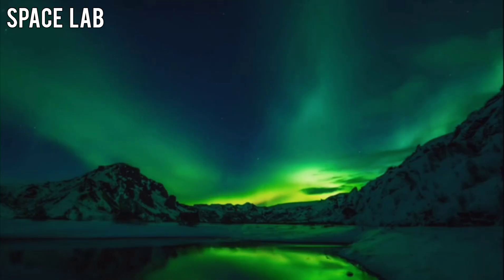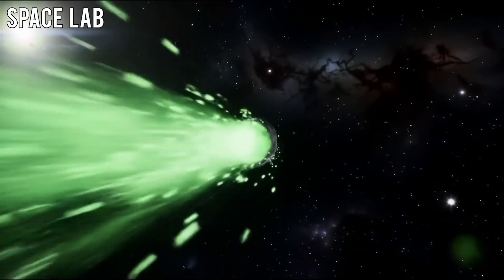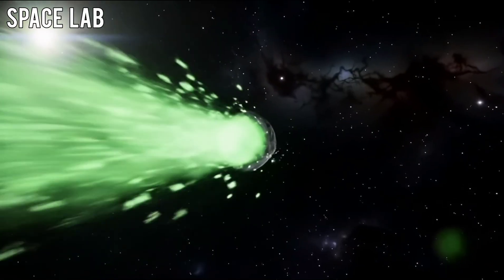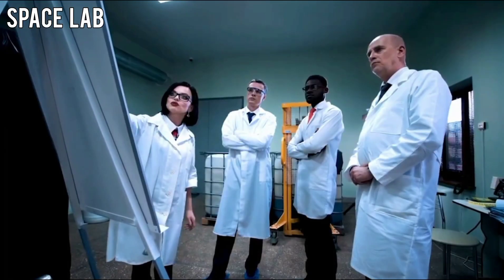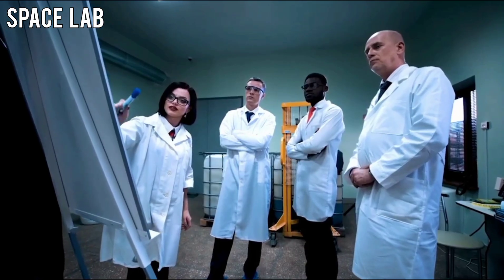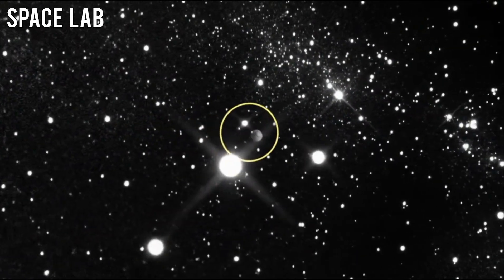Under normal conditions, space debris and ice crystals scatter randomly. But in this case, the particles were aligned, forming symmetrical, grid-like arrangements. No natural process could explain that.